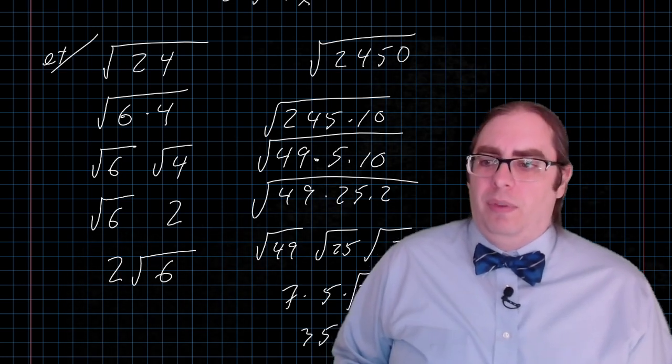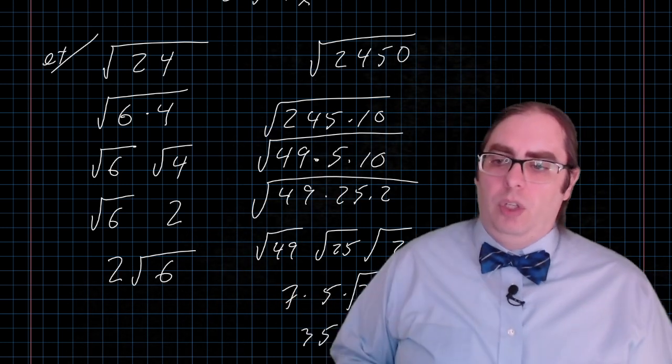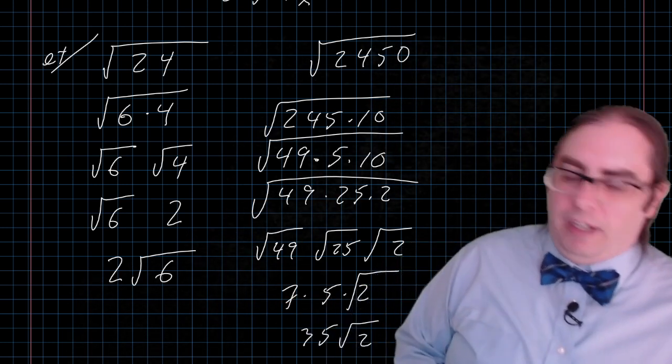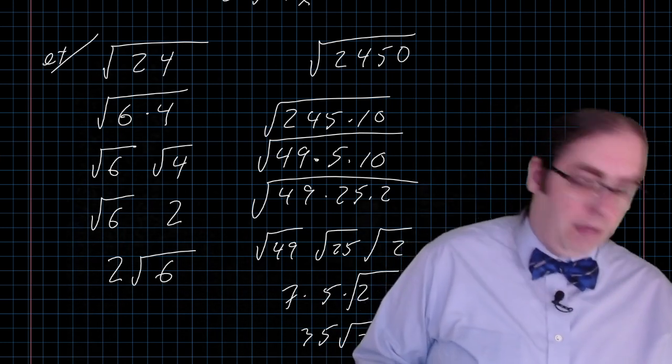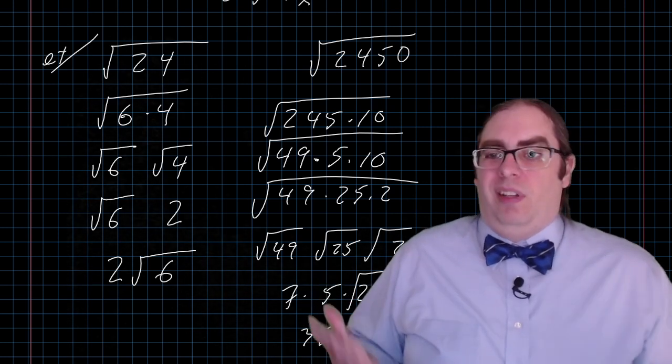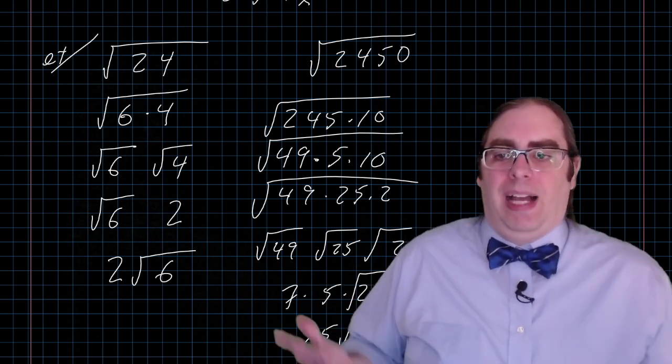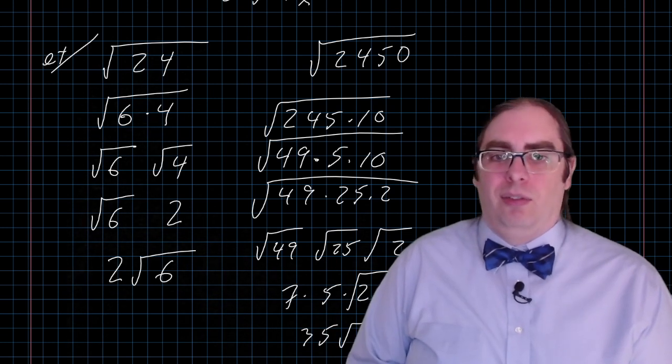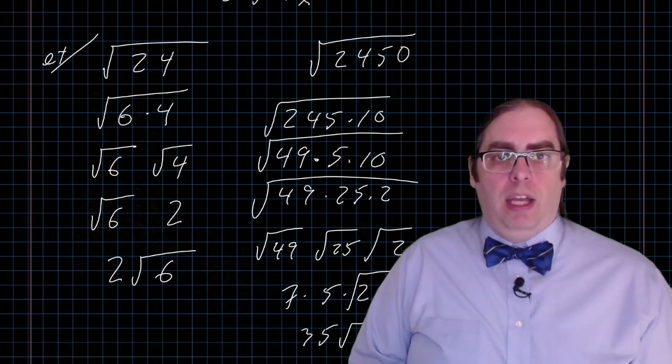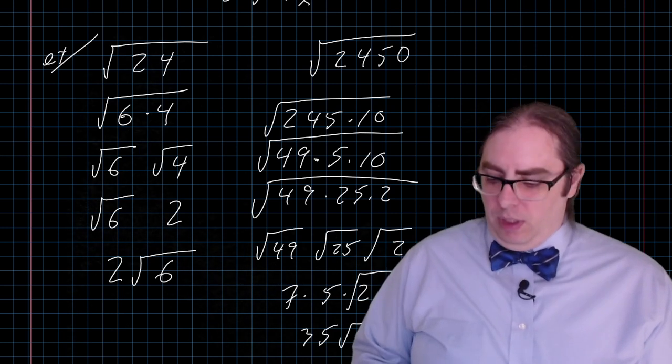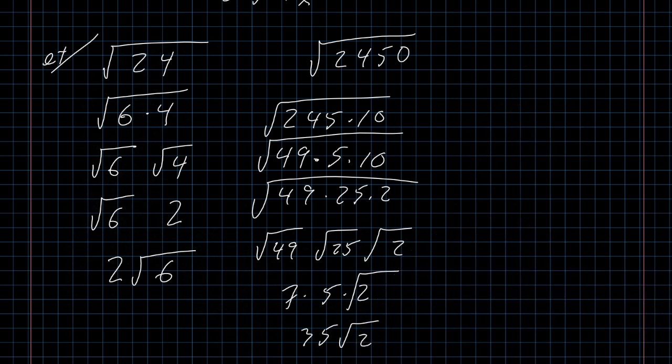But is it useful? Why would you ever want to write 2 square root of 6 or 35 times the square root of 2 instead of writing 4.8 or 49 point whatever that was? Honestly, I don't know. Other than math class, there's no reason for that. There's no value to it. But it is a valuable practice. Using that as a way of getting accustomed to these kinds of manipulations. Working with numbers tends to make more sense to most people than working with variables.